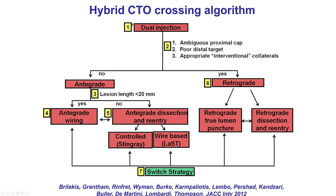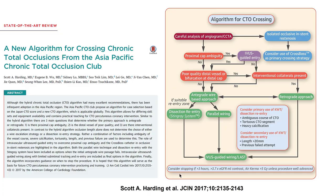The first algorithm was the hybrid algorithm, published 10 years ago, which provided for the first time a systematic approach to CTO crossing. It emphasized the importance of dual injection and careful review of the angiogram, with special focus on various characteristics such as the clear location of the proximal cap, the quality of the distal vessel, and the presence of collaterals appropriate for the retrograde approach. Based on those characteristics, either a primary antegrade or a primary retrograde approach was used. One of the key contributions of the hybrid algorithm was the emphasis on changing strategy — if the initially selected approach did not work, it was important to change to another one that might be more successful.